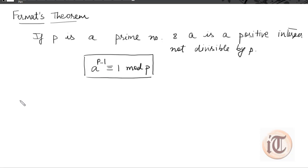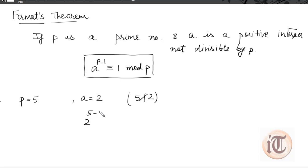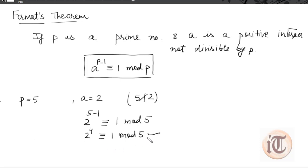For example, if p equals 5, which is a prime number, and a equals 2, which is a positive integer not divisible by p, then according to Fermat's theorem: 2 to the power 5 minus 1 is congruent to 1 mod 5. This means 2 to the power 4 is congruent to 1 mod 5, or 2^4 = 16, and when we divide 16 by 5 we get a remainder of 1.